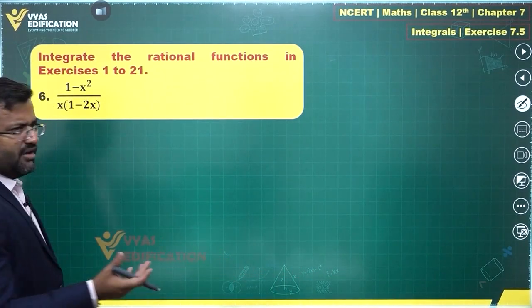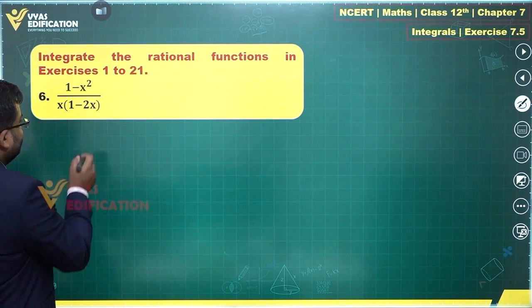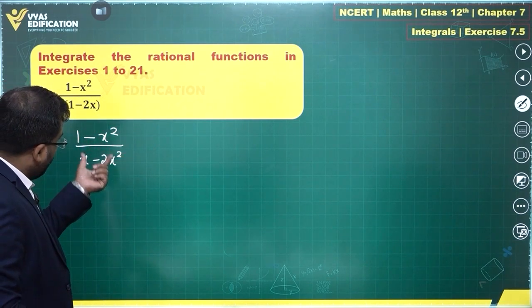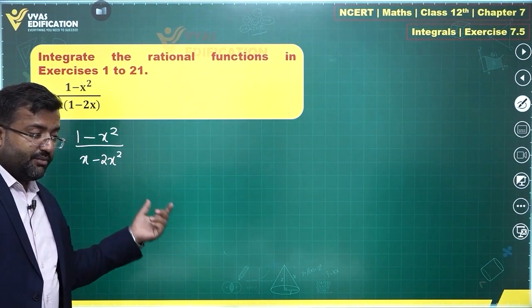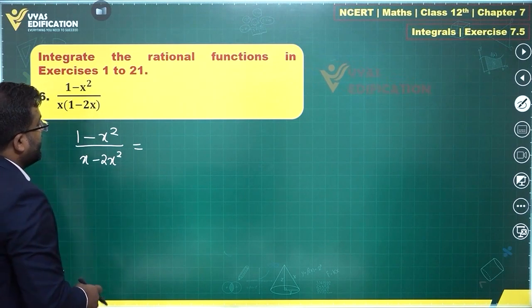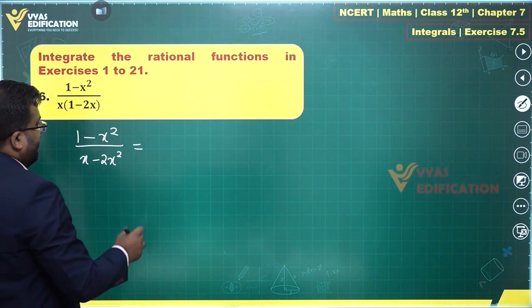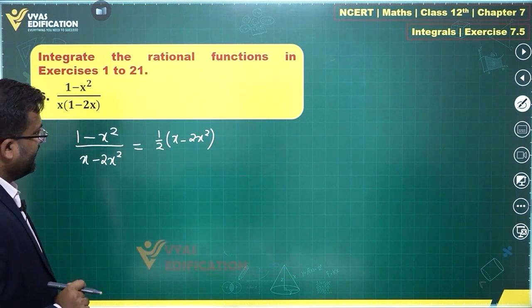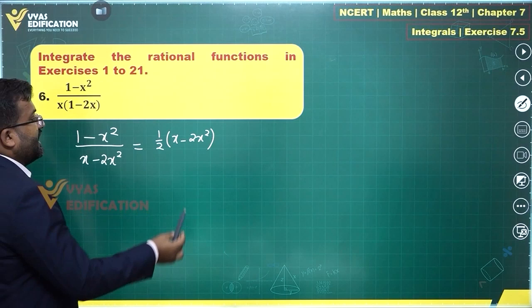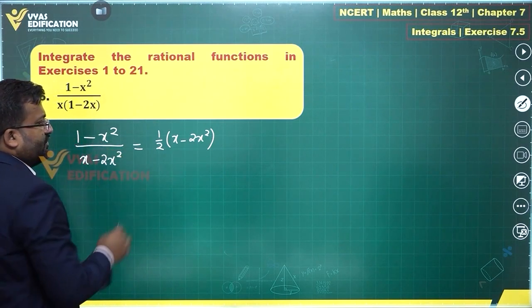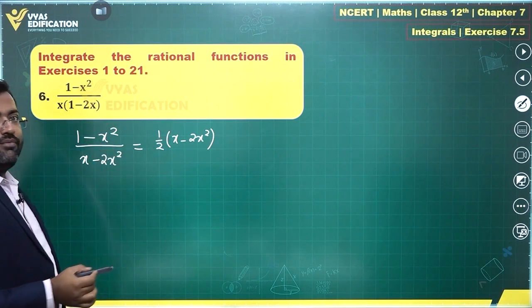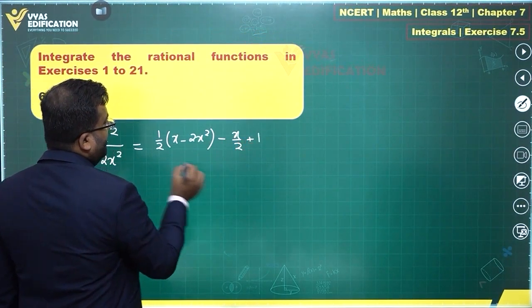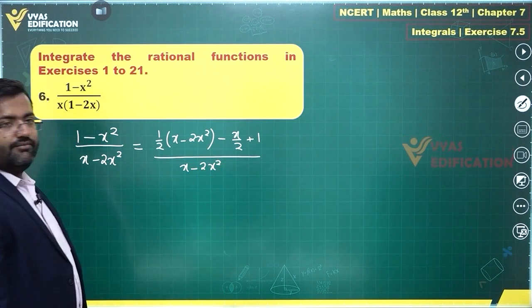This is not very complicated. We have 1 minus x square upon x minus 2x square. To divide, let's bring a quotient — write the dividend in terms of the divisor. For minus x square to become minus 2x square, we multiply by 1/2. So half times (x minus 2x square) gives minus x square. The extra term is plus x by 2, so we subtract minus x by 2, and we also have a plus 1 extra. The denominator is x minus 2x square.